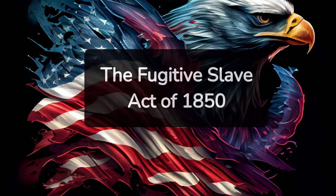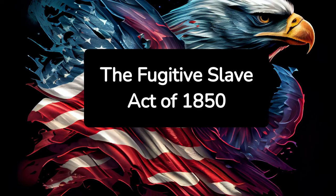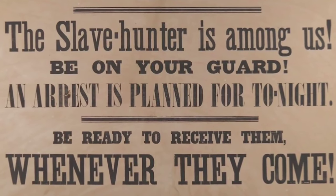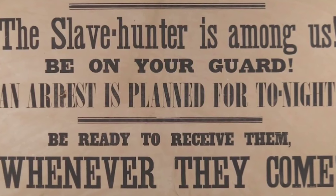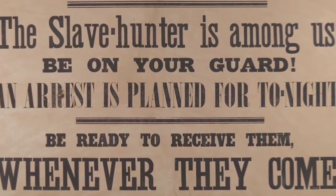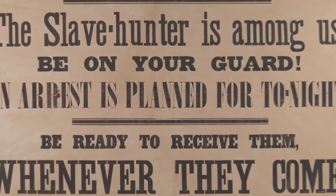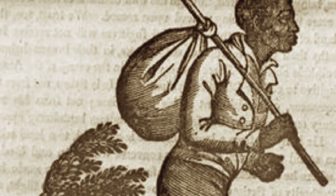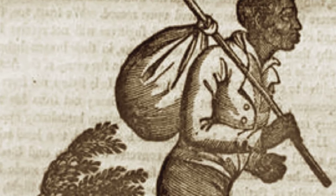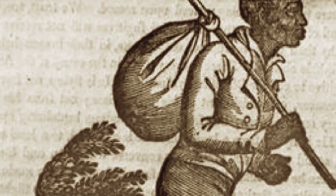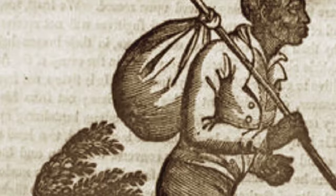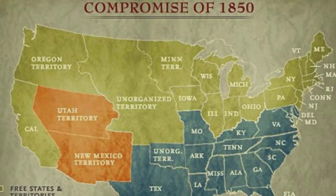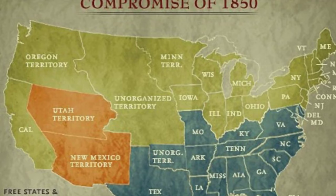1. The Fugitive Slave Act of 1850. The Fugitive Slave Act forced citizens to assist in the capture of escaped slaves and denied the accused a fair trial. This law prioritized slave owners' rights over the basic human rights of African Americans. It led to increased violence and fear among the free black communities and those seeking freedom.